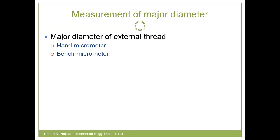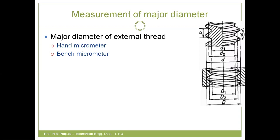The first topic is measurement of major diameter for external threads. For this, we generally use two setups. One is a simple hand micrometer, which we frequently use for measurement of any external feature. The second is a bench micrometer. For an external thread, major diameter is denoted as small d. Using a hand micrometer, you make contact of one crest with the anvil end and the other crest with the spindle, then take the reading.